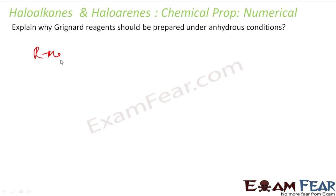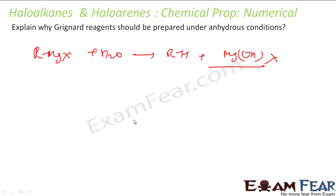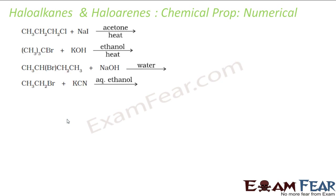Explain why Grignard reagent should be prepared under anhydrous conditions. RMgX is very unstable. If any moisture is present, water reacts with it to form R-H and Mg(OH)X. This destroys the Grignard reagent, so it must be prepared under anhydrous conditions — that is, without any moisture.